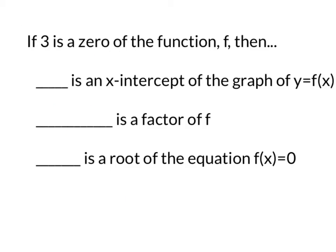Working off of that, if we know that 3 is a zero of the function f, then we also know that it's an x-intercept. Because we said that the point (3, 0) is on the curve — if we graphed (3, 0), that would be right here. Which means my curve is going to pass through that point, making that at least one of the x-intercepts of the graph of y equals f of x.